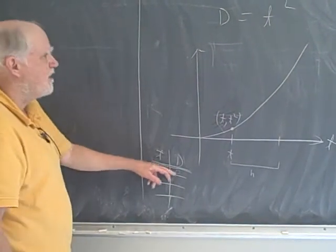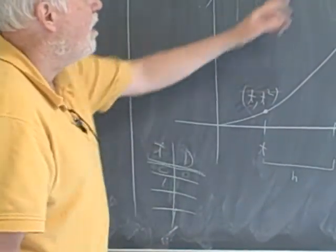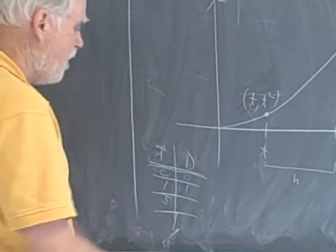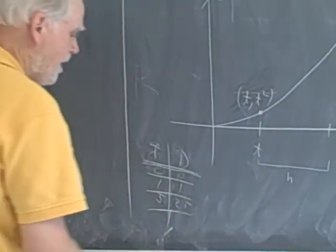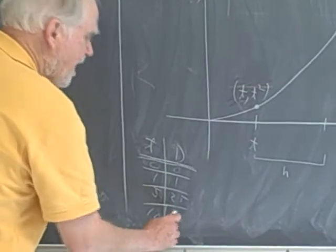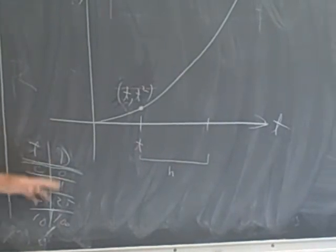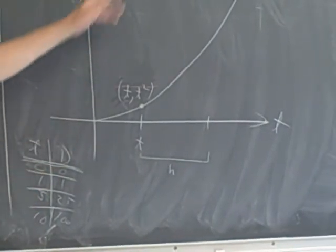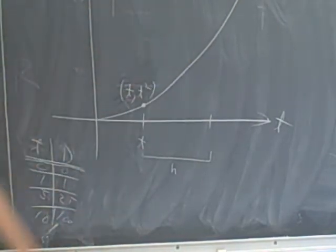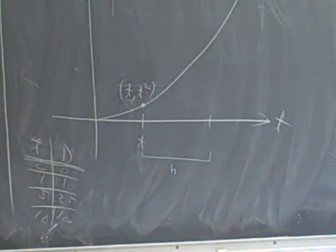At time zero we've gone zero miles. And after one hour we've only gone one mile. And after five hours we've gone 25 miles. So it's very slow in the beginning but when we get up to 10 hours we've traveled 100 miles. So it seems to be increasing in speed and that's an important aspect of this.